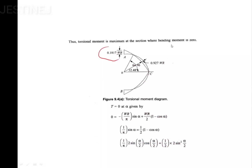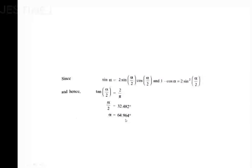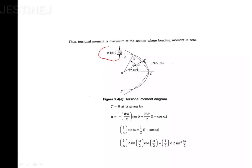Importantly, the torsion moment is maximum at the section where the bending moment is zero. The bending moment is zero at alpha = 32.48°, and at that same point the twisting moment is maximum. Setting T = 0 gives alpha = 64.964° — which is double the contraflexure angle of 32.48°. This gives the complete twisting moment diagram.